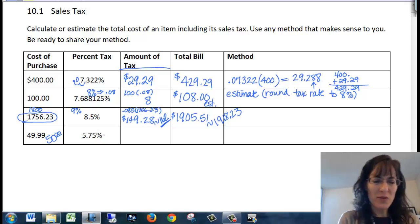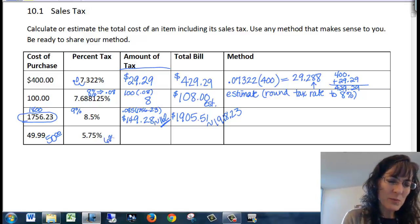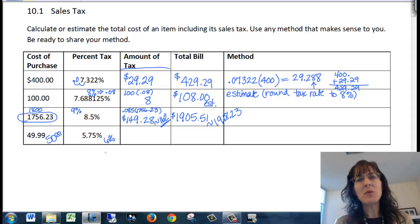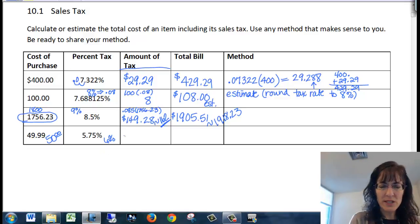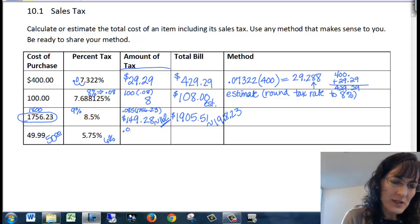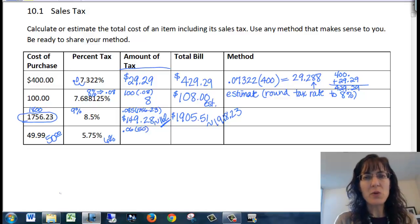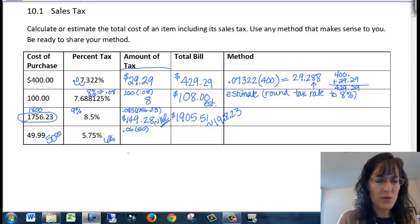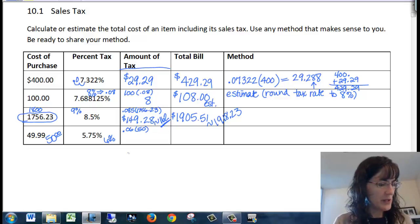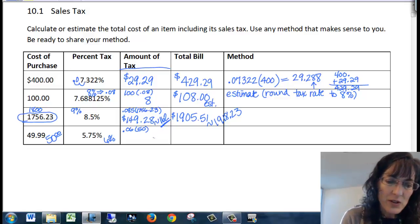And 5.75%, I'll call it 6%. And then I'm thinking 0.06 times 50, and that's going to give me 3. 0.06 times 50 gives me 3. So that gives me an approximation of $3.